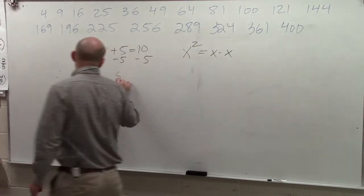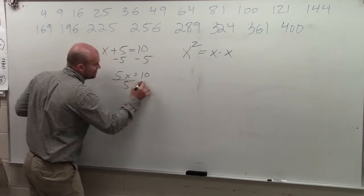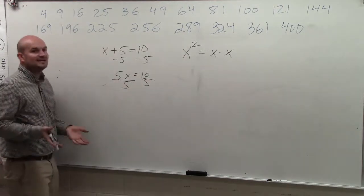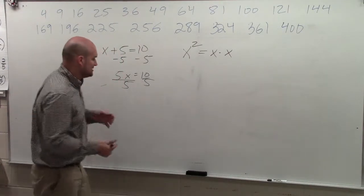If I had 5 times x equals 10, the inverse operation of multiplication would be divide. And the inverse operation of dividing is multiplying. Right? So this kind of brings me to my question.